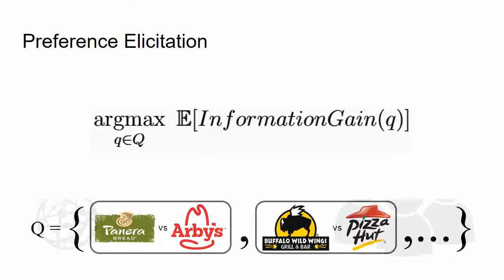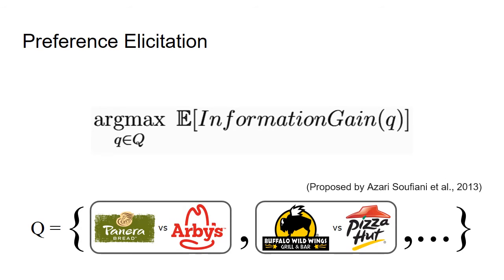Here's where our elicitation algorithm comes into play. We ask for pairwise comparisons that maximizes information gain. From the set of restaurants you've been to, we're gonna pick two for you to compare so that we can learn overall preferences as much as possible. In the algorithm, we utilize a relatively newly proposed information criterion, which measures the information gain from your response by the minimum certainty of the comparison between any two candidates.